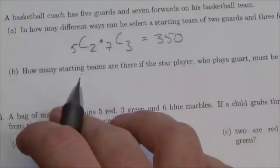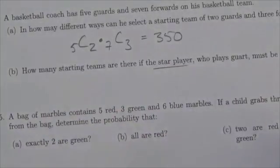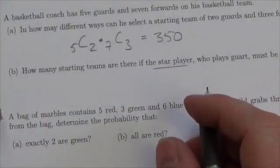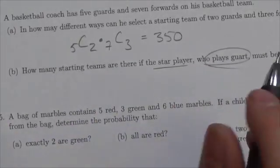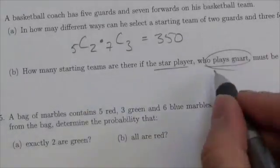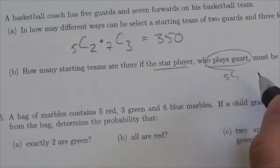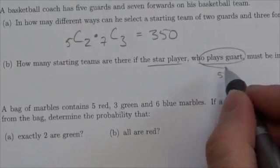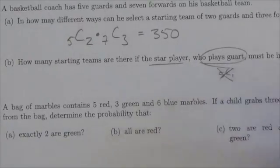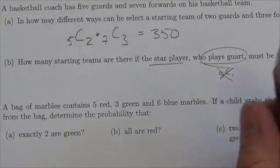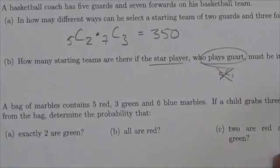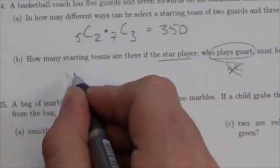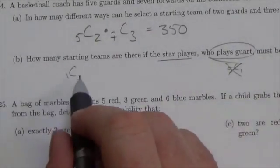Moving to the next part: what if a specific star player must be on the team? That player is from the guards. A really common mistake here is to write five choose one, saying he's part of the group of guards — but that's actually incorrect. Five choose one is choosing any person from that group, not a specific person. Since there's one star player and I'm choosing that specific player, it's one choose one.